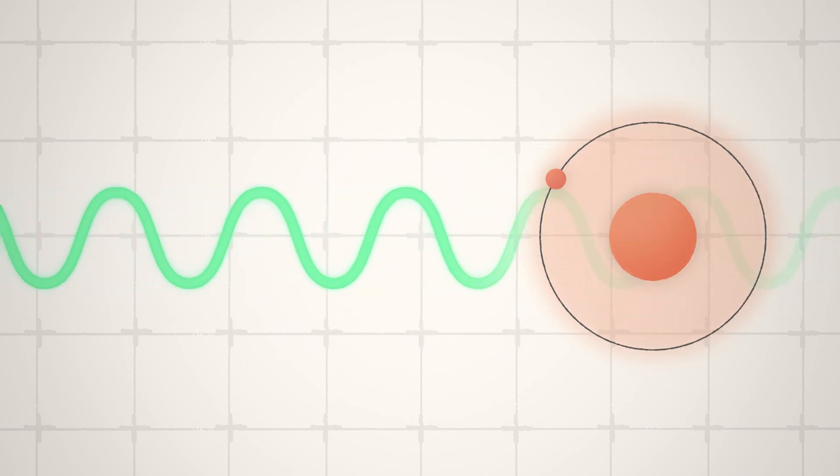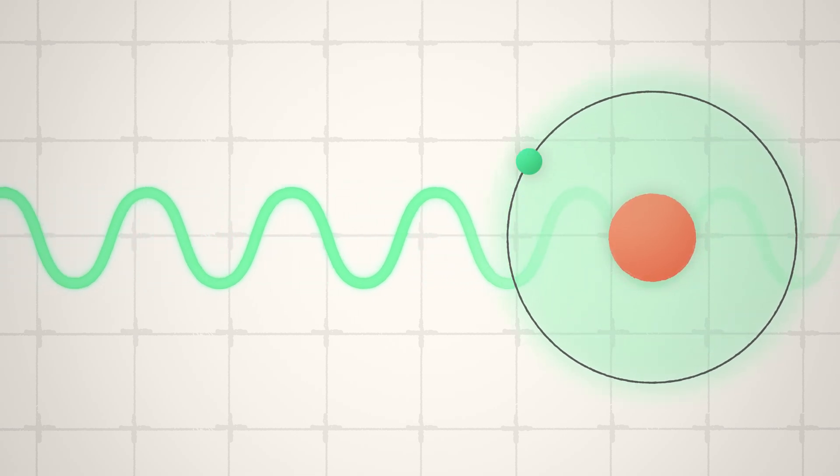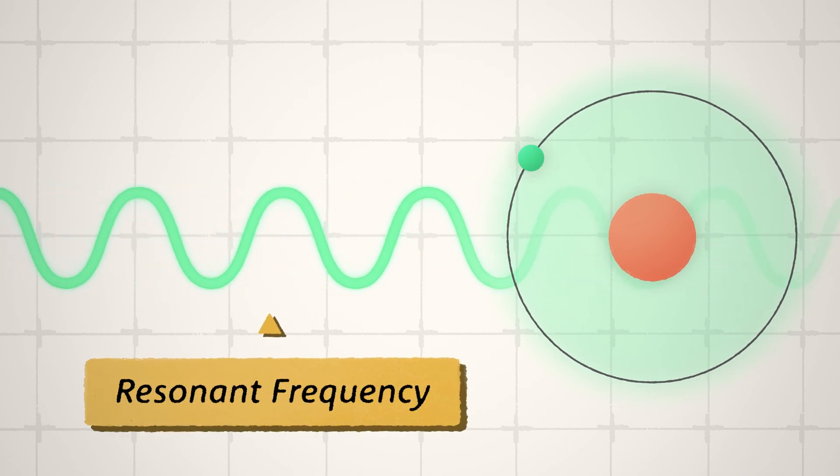When a light wave hits an atom, the atom can absorb some of the light's energy, causing one of its electrons to jump to a higher energy level. But the electron will jump only if the light's frequency is close to a special number known as the atom's resonant frequency.